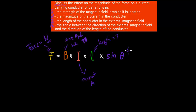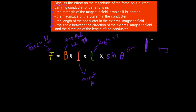Sine theta determines the angle between the conductor and the magnetic field. For example, if we have our rod — our conductor — and our magnetic field perpendicular to it, then the angle would be 90 degrees. This would be the angle between your magnetic field and your actual conductor, which would be 90 degrees. In this case sine theta would be sine 90.